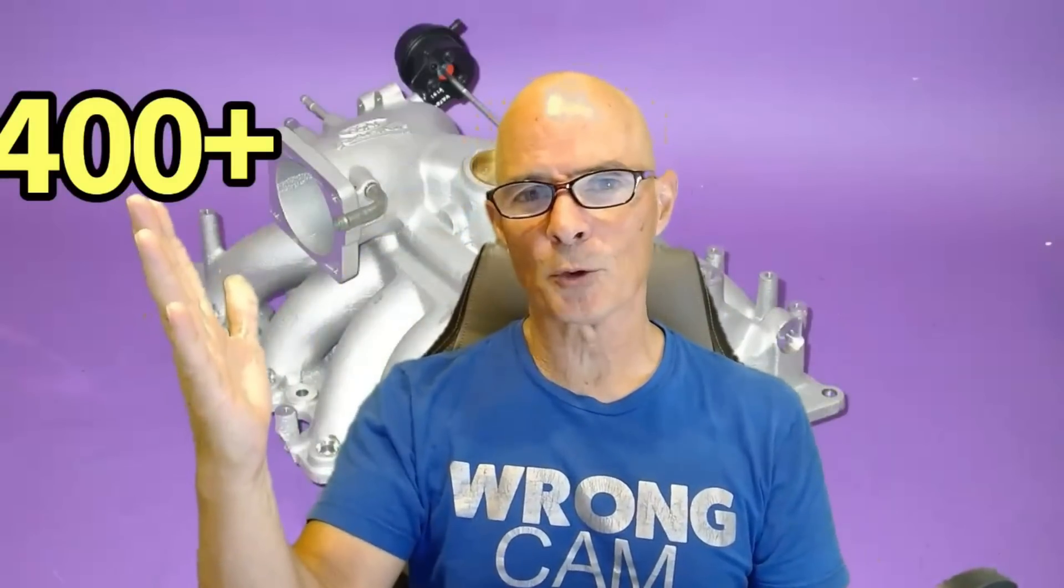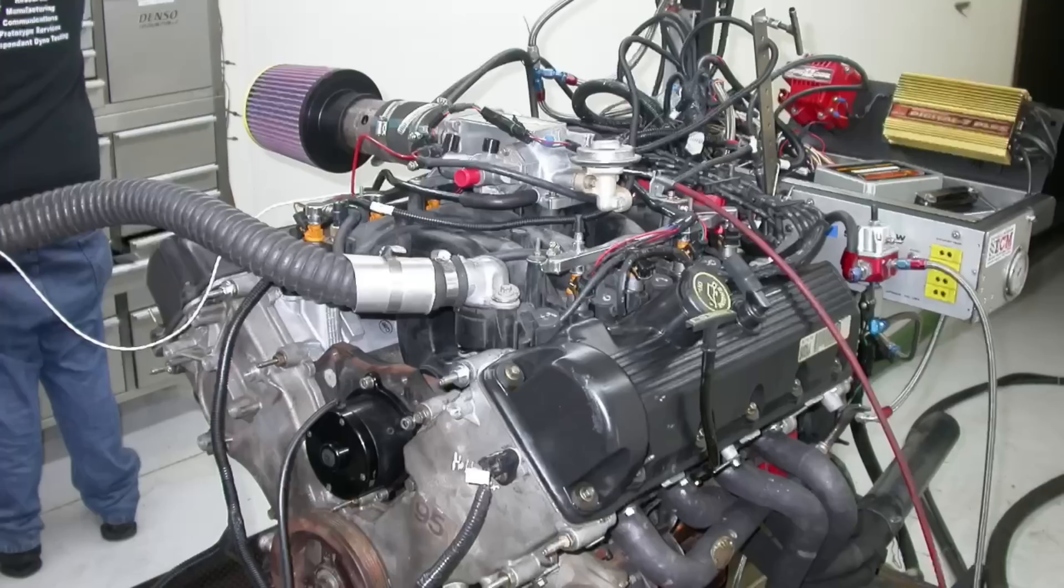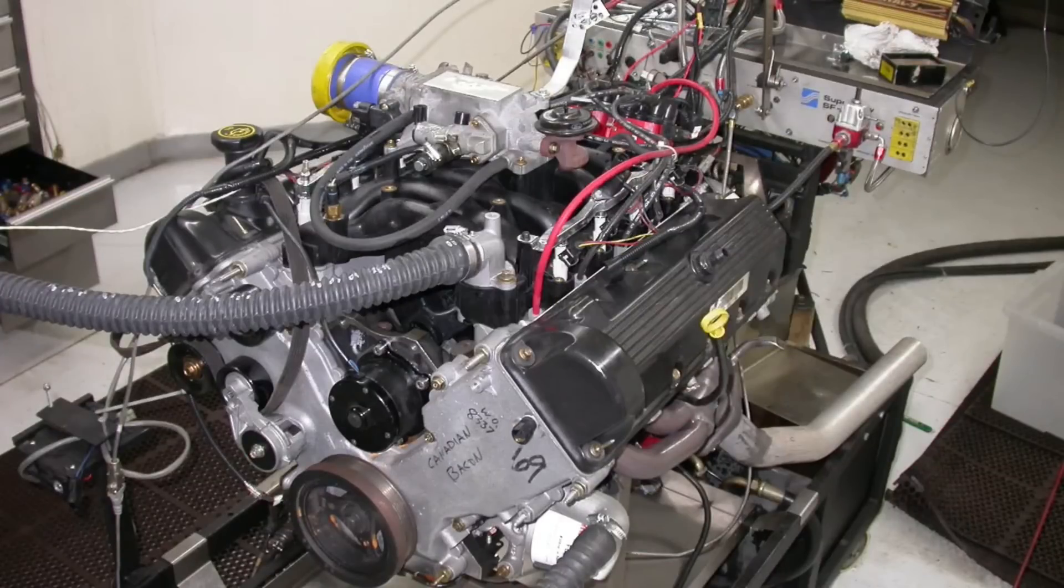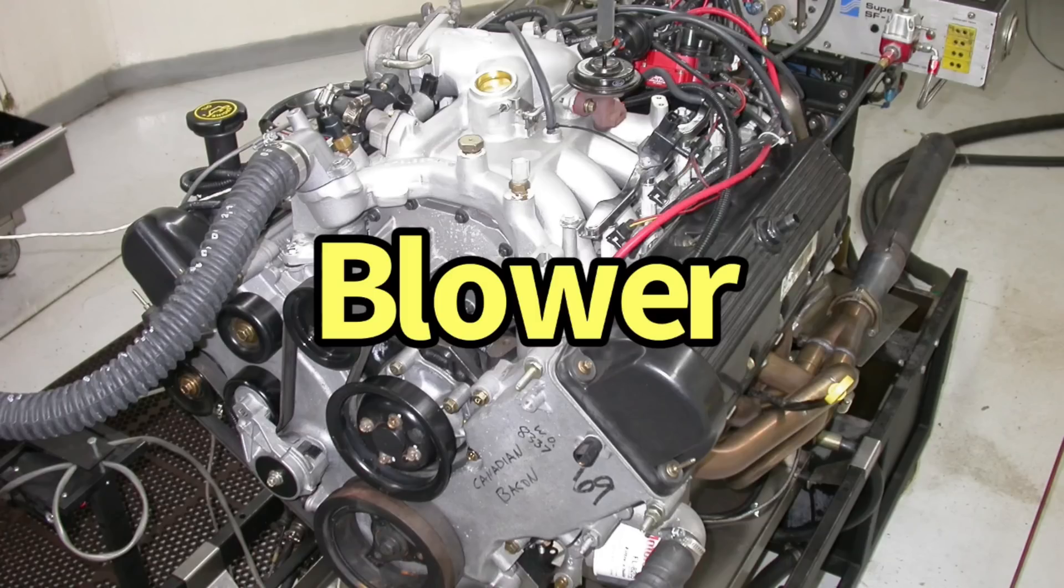That's right, you need to choose between one motor that makes over 400 horsepower and the other motor that makes over 400 horsepower. Both of those motors are 4.6 liter two-valve modular Fords. One's a naturally aspirated motor that makes over 400, one is a supercharged motor that makes over 400. The question is, which one do you choose? Well, that's why I'm here. I'm going to show you the power curves and you get to choose.